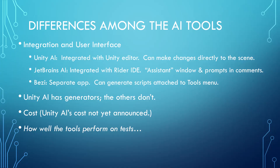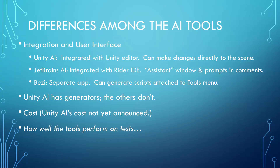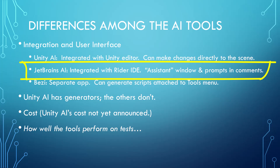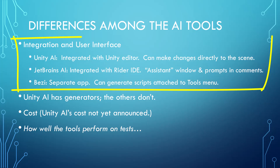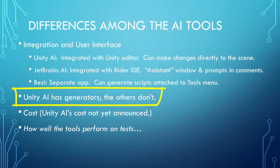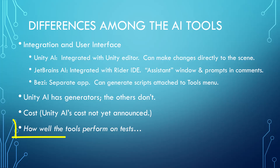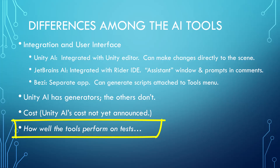Here are some of the key differences between the tools. A big difference is how each AI assistant is integrated: Unity AI is integrated into the Unity editor, JetBrains AI is integrated into the Rider IDE, and Bezzi is its own separate application — which impacts how directly the AI can make changes. Unity AI also has the generators; the others don't. The cost of the tools is different, and we don't yet know what the cost of Unity AI will be because it's still in beta. The tools also perform differently on the tests I gave them.